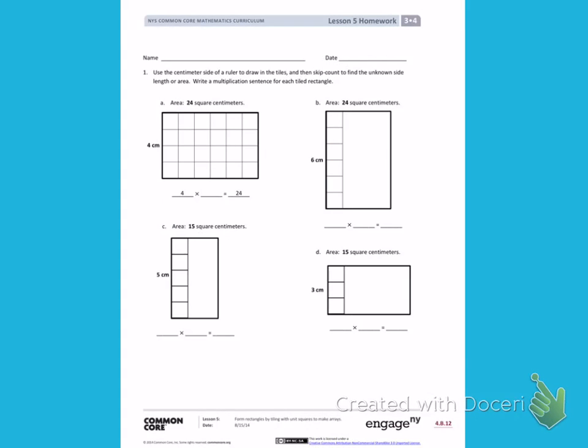This is Module 4, Lesson 5, Homework, Side 1. Today's objective was to form rectangles by tiling with unit squares to make arrays.